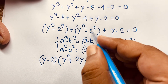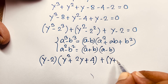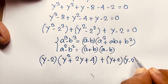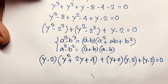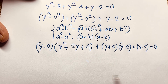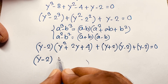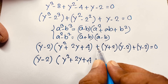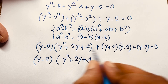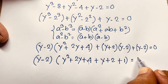So the equation becomes: (y - 2)(y² + 2y + 4) + (y + 2)(y - 2) + (y - 2) = 0. We can see that (y - 2) is common throughout. Factoring it out: (y - 2) times [(y² + 2y + 4) + (y + 2) + 1] = 0.